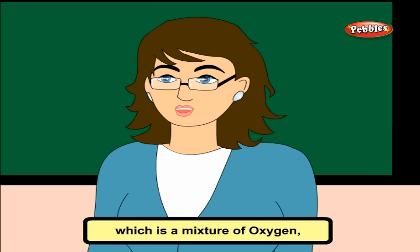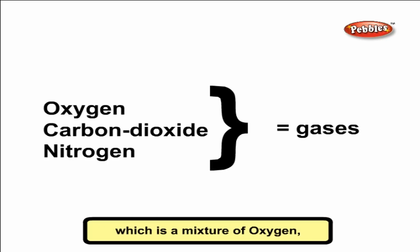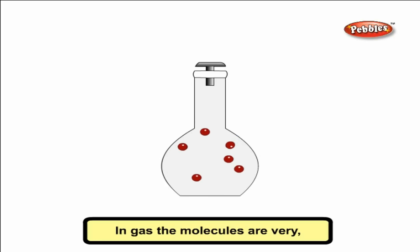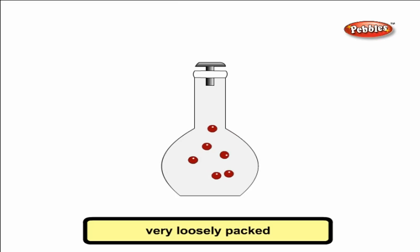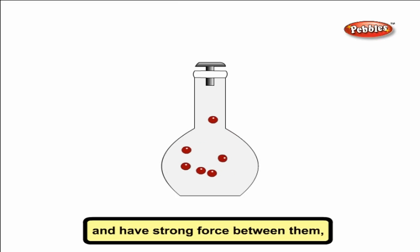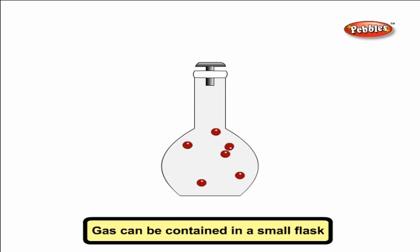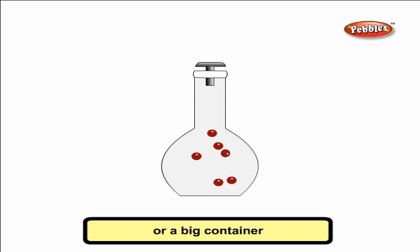Gas is the third state of matter. An example is air, which is a mixture of oxygen, carbon dioxide, nitrogen and other gases. In gas, the molecules are very, very loosely packed and have a weak force between them to stay together. Gas can be contained in a small flask or a big container.